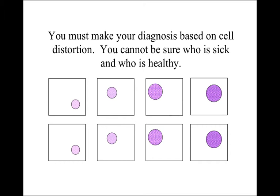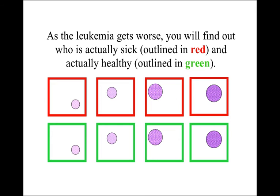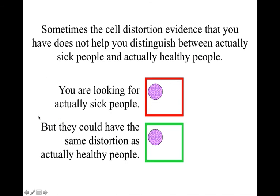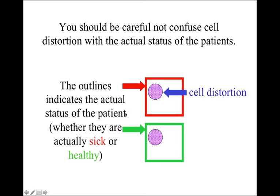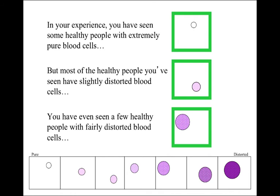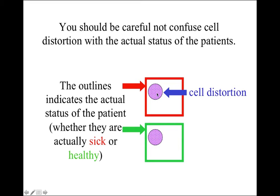You must make your diagnosis based on cell distortion, but you cannot be sure who is sick and who is healthy at the time of the diagnosis. As leukemia gets worse, you will find out who is actually sick, outlined in red, and actually healthy, outlined in green. Here we have the cell distortion in the middle, and the actual eventual outcome of the patient. Sometimes the cell distortion evidence does not help you distinguish between actually sick and actually healthy people — they could have the same distortion. The outlines indicate the actual status of the patient, while the center gives you just the amount of cell distortion you can observe.